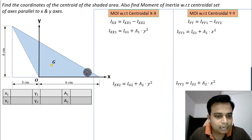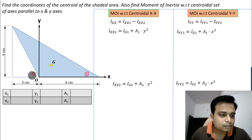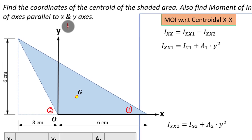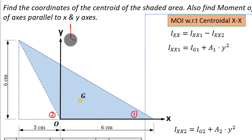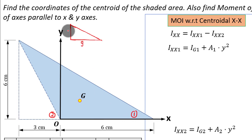One is this bigger right angle triangle. And the other one is this smaller one. As far as this right angle triangle is concerned, it has a base of six plus three, that is nine. And the height over here is six. Let's call this as one.